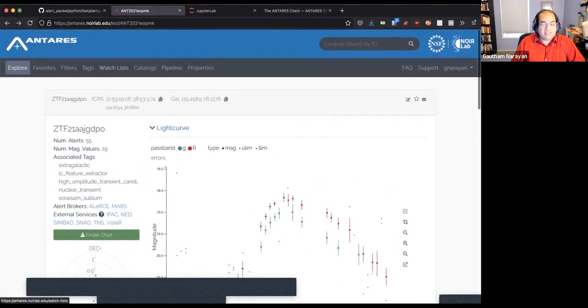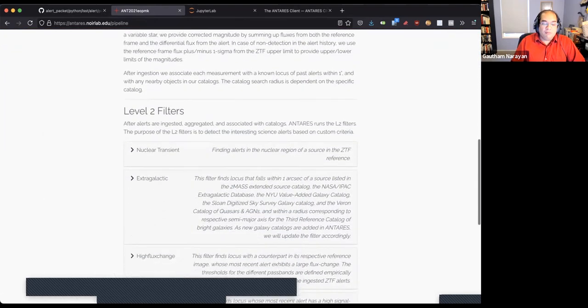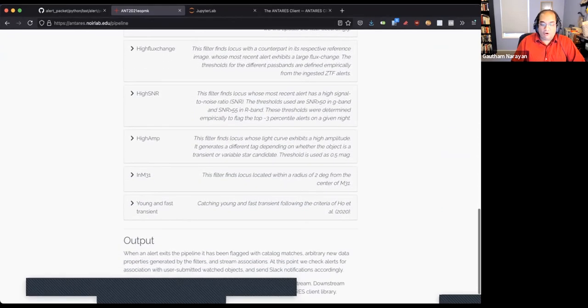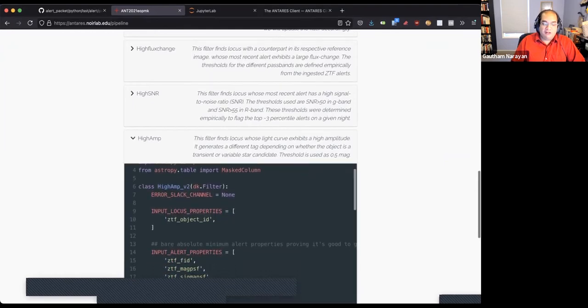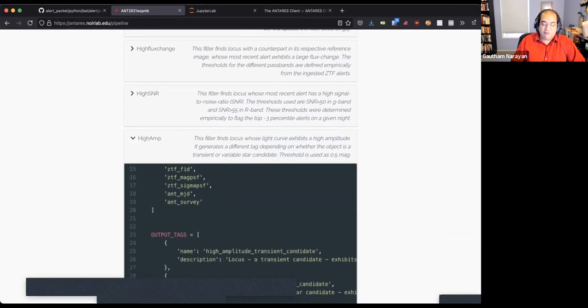And this tag, Monica's subluminous tag, may not be exactly what you want for your science. But you can actually see your own science codes by simply checking out how our tags are created. If you want to see how our high amplitude tag is created, simply expand that code, and you'll get the Python code that our system runs on the ZTF alert stream. This is a user contributed code. And you can write your own version of this code to do this.